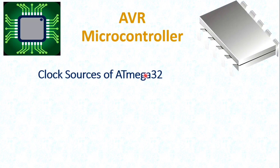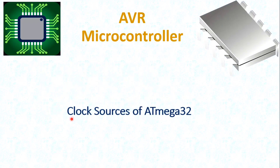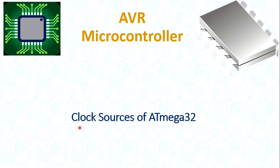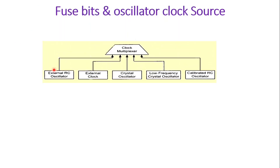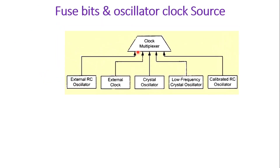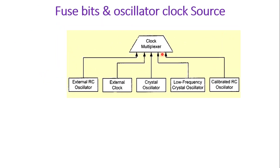Welcome to the AVR microcontroller video lecture series. In this video we are going to discuss clock sources of ATmega32 — fuse bits and oscillator clock sources. There are many clock options available in ATmega32 by using which we can apply the clock to the ATmega32 microcontroller.